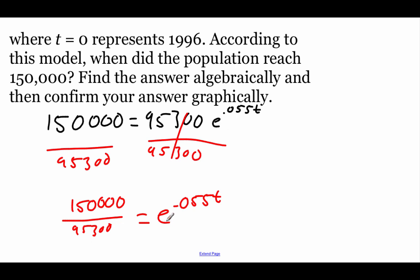Now we have to get rid of this e exponential using some different properties that we've talked about throughout this chapter. I think the best way to do this is to rewrite it in logarithmic form. Since this is a base e exponential, we're going to be using a base e logarithm or a natural log. So I would rewrite this one as the natural log of our big fraction, 150,000 over 95,300 equals 0.055t.